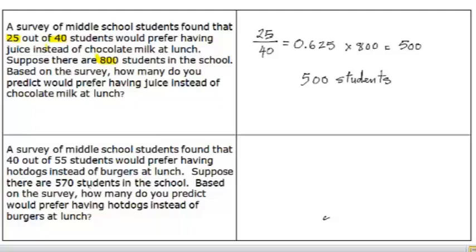The next example is the same exact thing. A survey of middle school students found that 40 out of 55 would prefer having hot dogs instead of burgers at lunch. If there are 570 students in the school, they want to know how many would prefer having hot dogs instead of burgers at lunch.